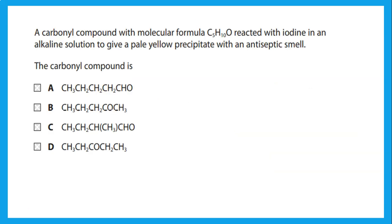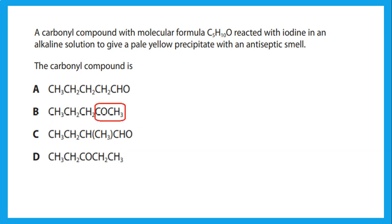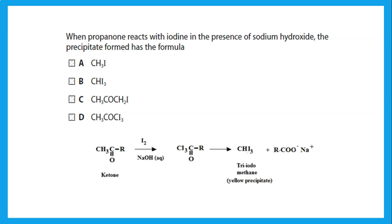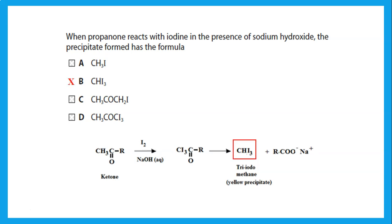If a carbonyl compound with molecular formula C₅H₁₀O reacts with iodine in alkaline solution to give a pale yellow precipitate with antiseptic smell, we look for a compound containing CH₃C=O. When propanone reacts with iodine in presence of sodium hydroxide, the yellow precipitate formed has the formula CHI₃ — not CH₃I. We want the one with three iodines.